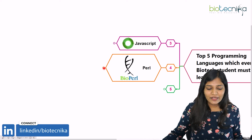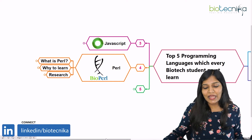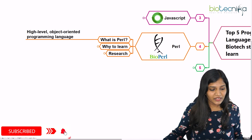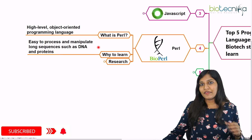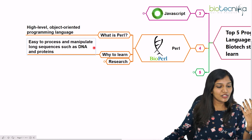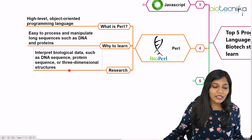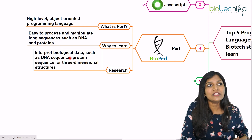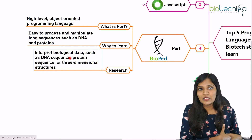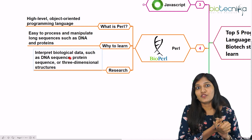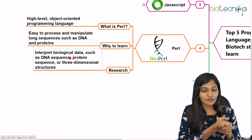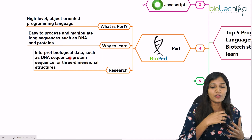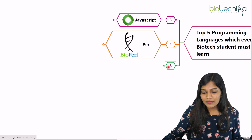Next is Perl — a wonderful programming language. Python, Perl, and R programming are all really good. Perl is an object-oriented programming language. It's very easy for manipulating DNA or proteins and is very useful in research. It helps with interpreting biological data — DNA sequences, protein sequences, and three-dimensional structures of proteins. BioPERL is an important programming language for any biotech fresher or experienced professional to learn.